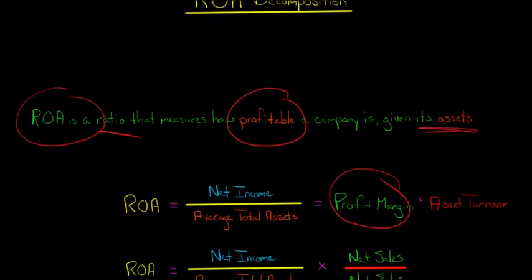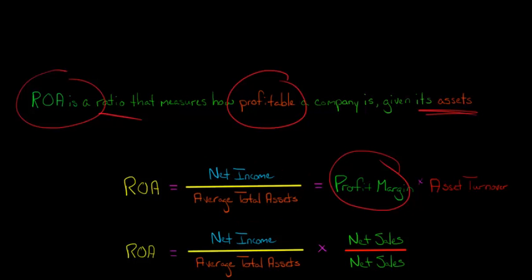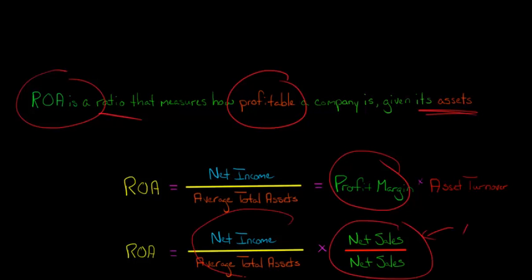I'm going to work out how we would derive this. We start with ROA as net income divided by average total assets, and then we multiply it by net sales divided by net sales, which equals one. So we're just multiplying this fraction by one.